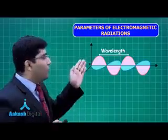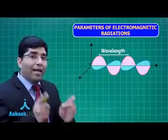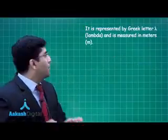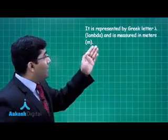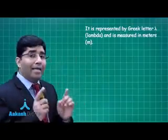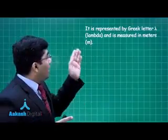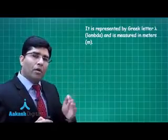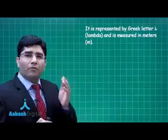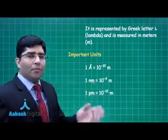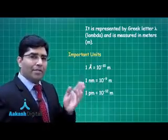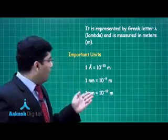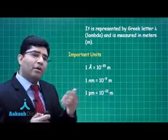Since wavelength is a length, it is measured in meters. It is represented by the Greek letter lambda. There are additional units for wavelength: one angstrom equals 10 to the minus 10 meters, one nanometer equals 10 to the minus 9 meters, and one picometer equals 10 to the minus 12 meters.